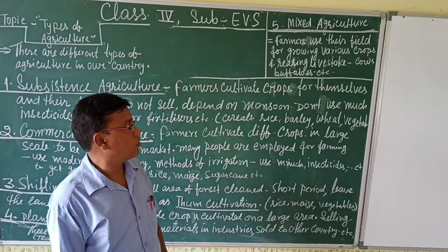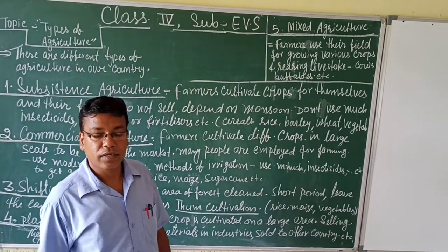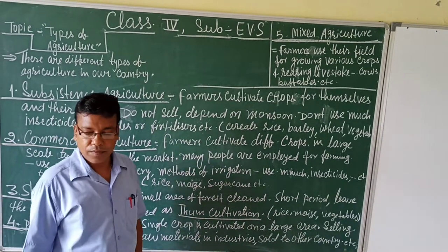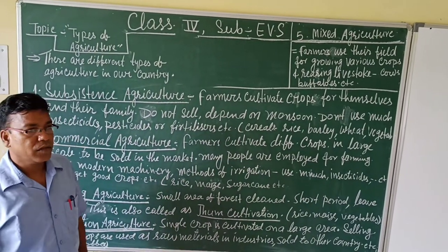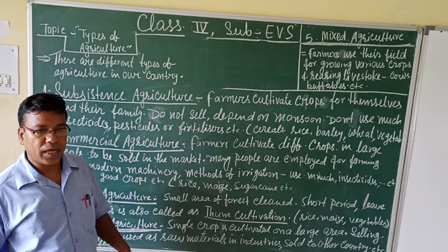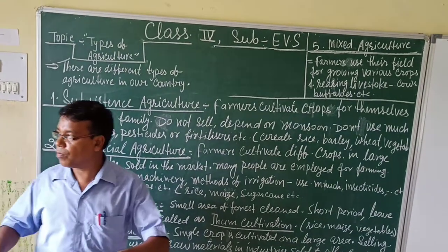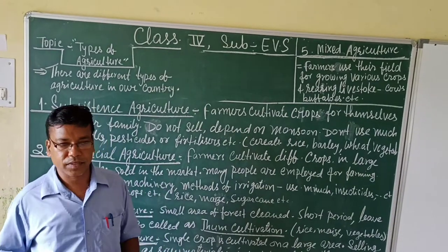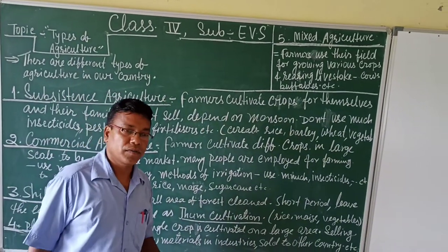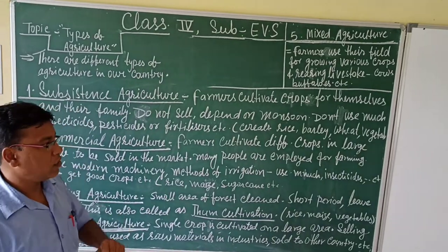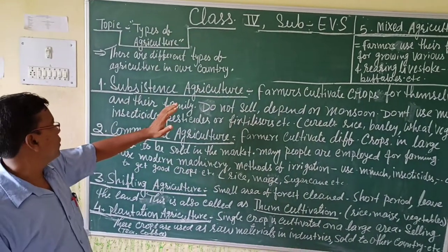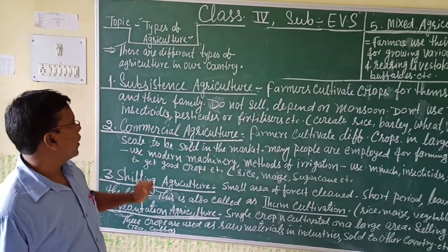This type of agriculture is called mixed agriculture. The farmer has to feed the animals, so he needs straw, grass, and other things for that. Some land is set aside for animal fodder purposes. So this type of agriculture involving both crops and livestock is called mixed agriculture.